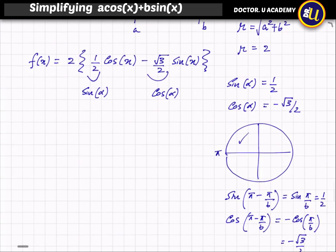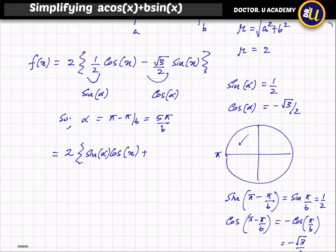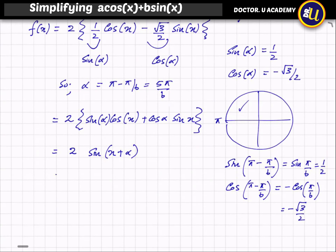So α = π − π/6 = 5π/6. Now substituting back, we have 2·[sin(α)·cos(x) + cos(α)·sin(x)] = 2·sin(x + α). Therefore the final answer is 2·sin(x + 5π/6).